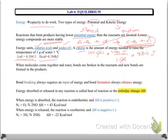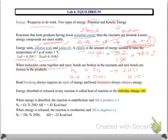Now let's talk about what happens when molecules come together and react. Bonds are broken in the reactants and new bonds are formed in the products. For example, hydrogen gas reacts with chlorine gas to make HCl. The H–H and Cl–Cl bonds are broken, and the new H–Cl bond is formed. Bond breaking requires energy, but when a bond is formed, energy is released. The energy absorbed or released in any reaction is called the heat of reaction, or the enthalpy change.